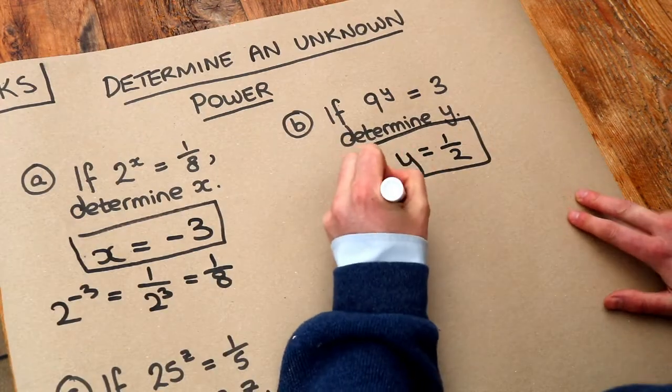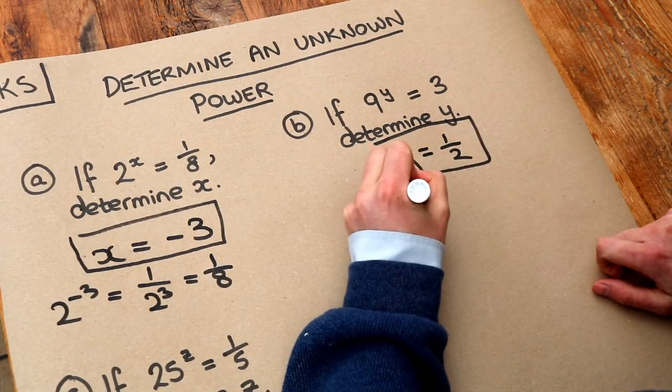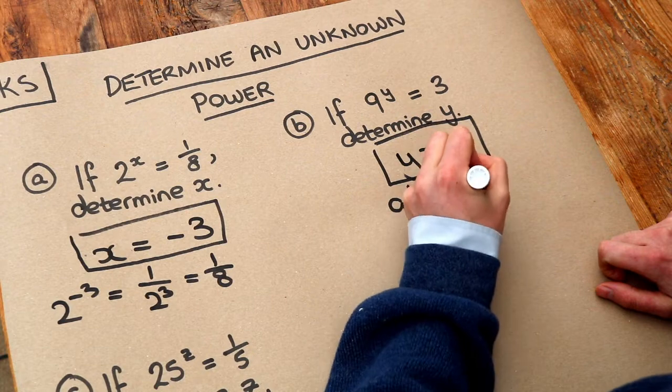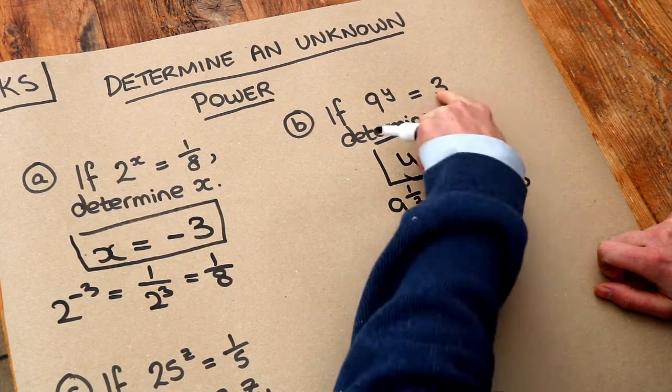And let's just test that. If we had 9 to the power of half, that would be the square root of 9, which is 3. So that is the right answer.